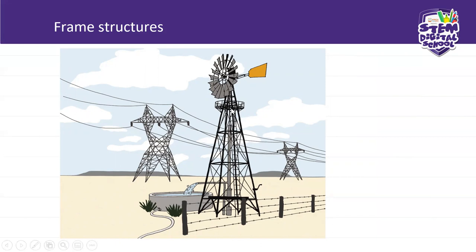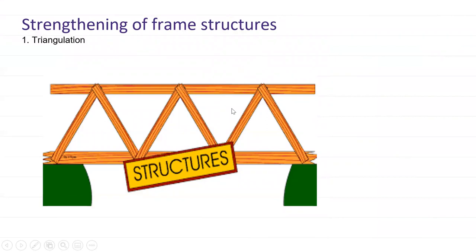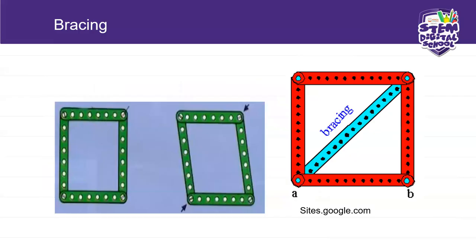We are going to see how you strengthen frame structures. We talked about triangulation yesterday and you saw it in these structures. We talked about cross bracing — cross bracing helps these shapes stay rigid in a frame structure. So in your cell phone tower, if you use these shapes, you must add cross bracing. We also talked about bracing and cassettes.